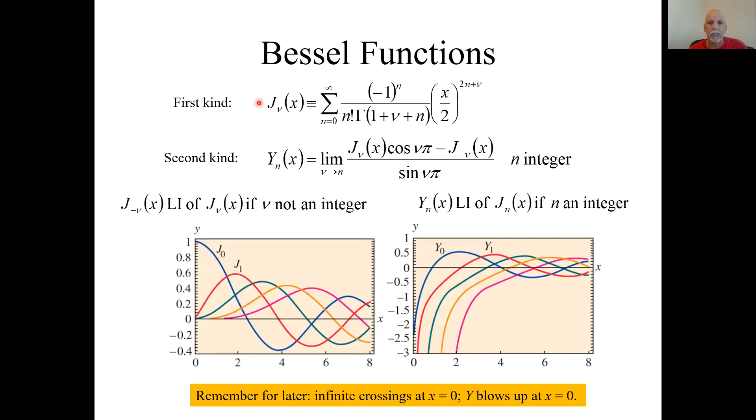So here it is again. We'll just give you the chart version. If nu is not an integer, then yes, this J sub minus nu is linearly independent of J sub nu. And these two guys, J sub nu and J sub minus nu, are the two particular solutions. And the general solution is then a linear combination of those two solutions.